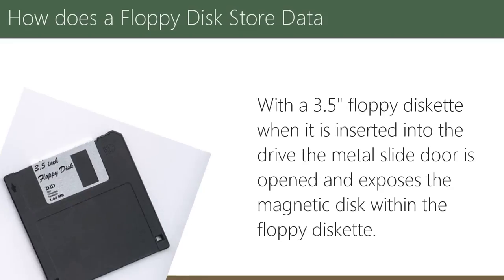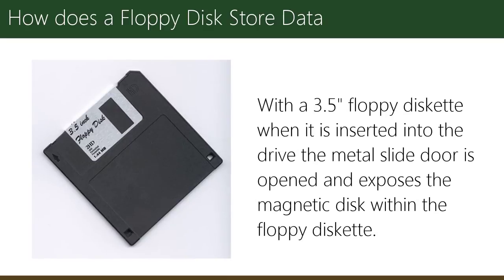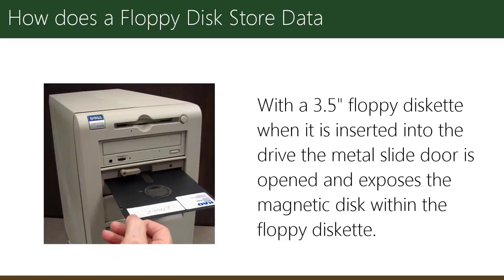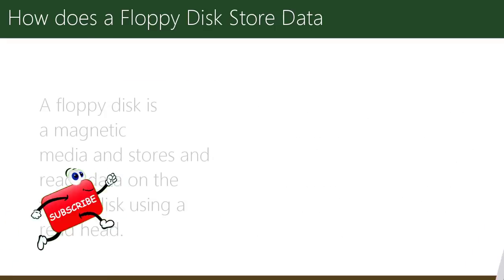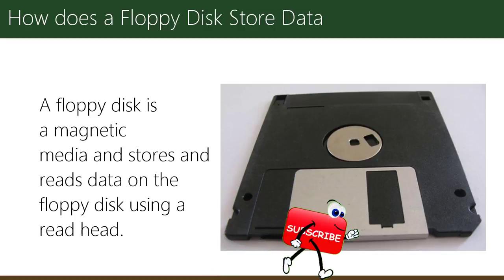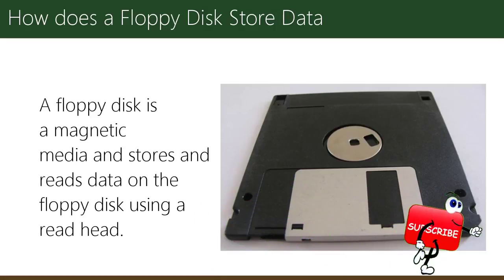How does a floppy disk store data? With a 3.5-inch floppy diskette, when it is inserted into the drive, the metal slide door is opened and exposes the magnetic disk within the floppy diskette. A floppy disk is a magnetic media and stores and reads data on the floppy disk using a read head.